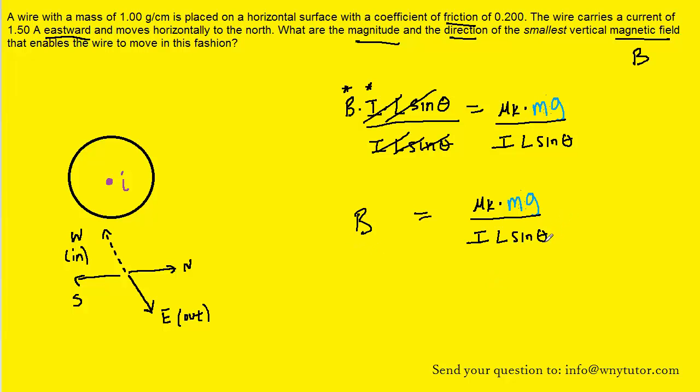Before we plug in known values to solve for B, we need to talk about that angle. The question wants the smallest magnetic field, and it turns out that to have the smallest magnetic field we want to make sure our magnetic field is pointing perpendicular to our wire. That means the magnetic field is pointing either downward or upward, and our job is to figure out which direction is correct using a right hand rule.